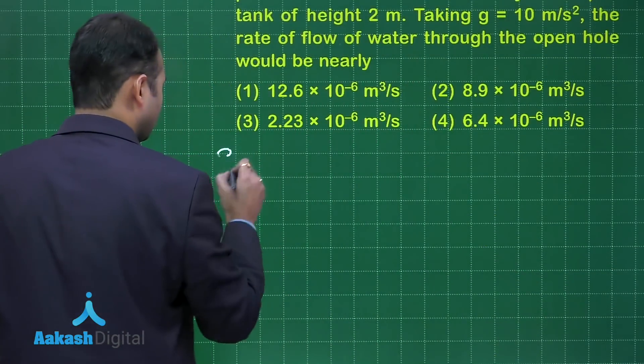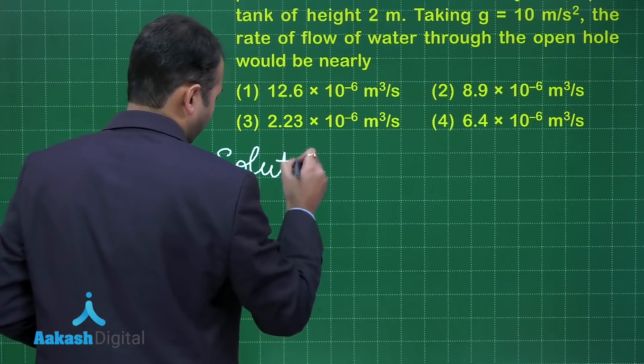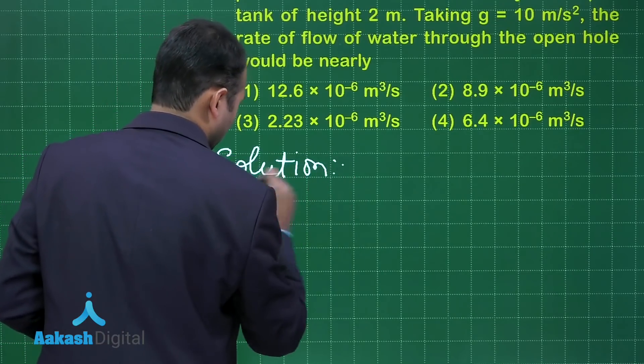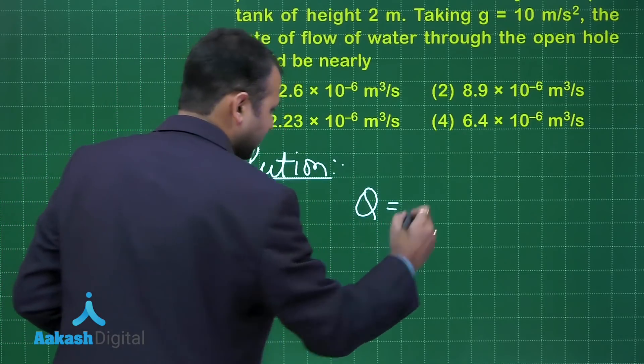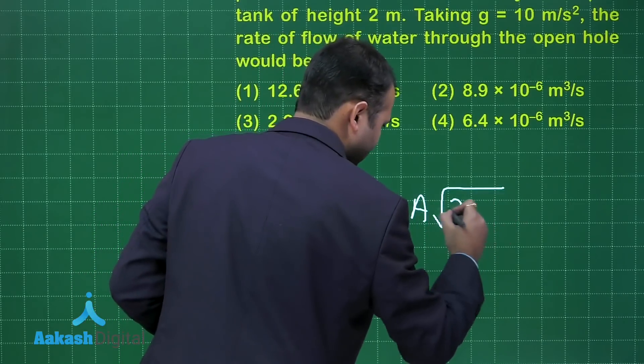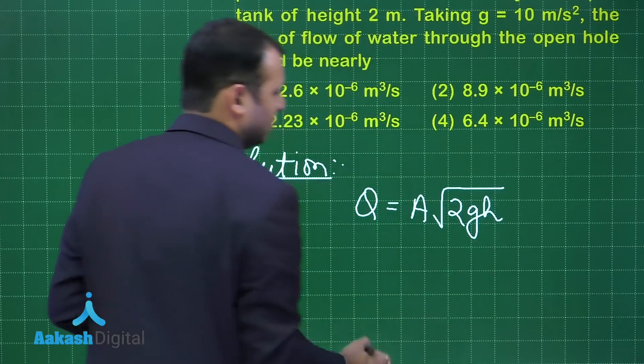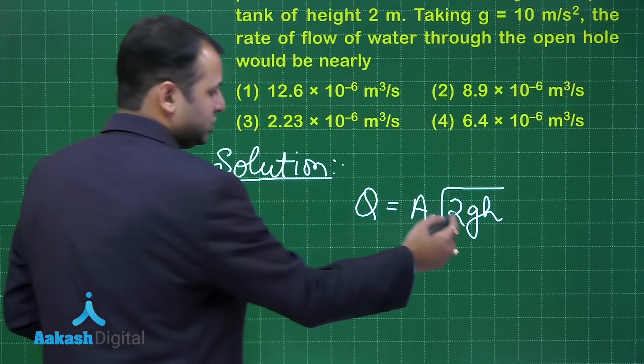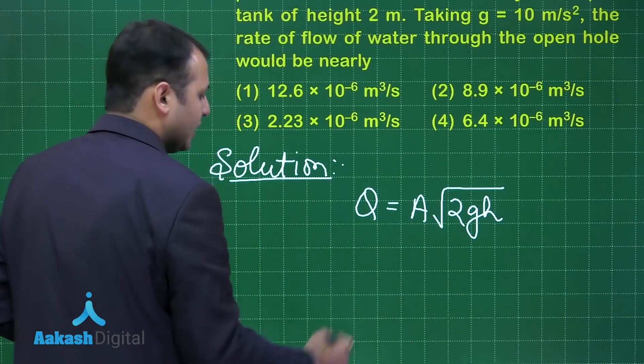So let's start with the solution. It's a formula based question where you will get this as the formula where A is the area of the hole, G is the acceleration due to gravity and H is the height.